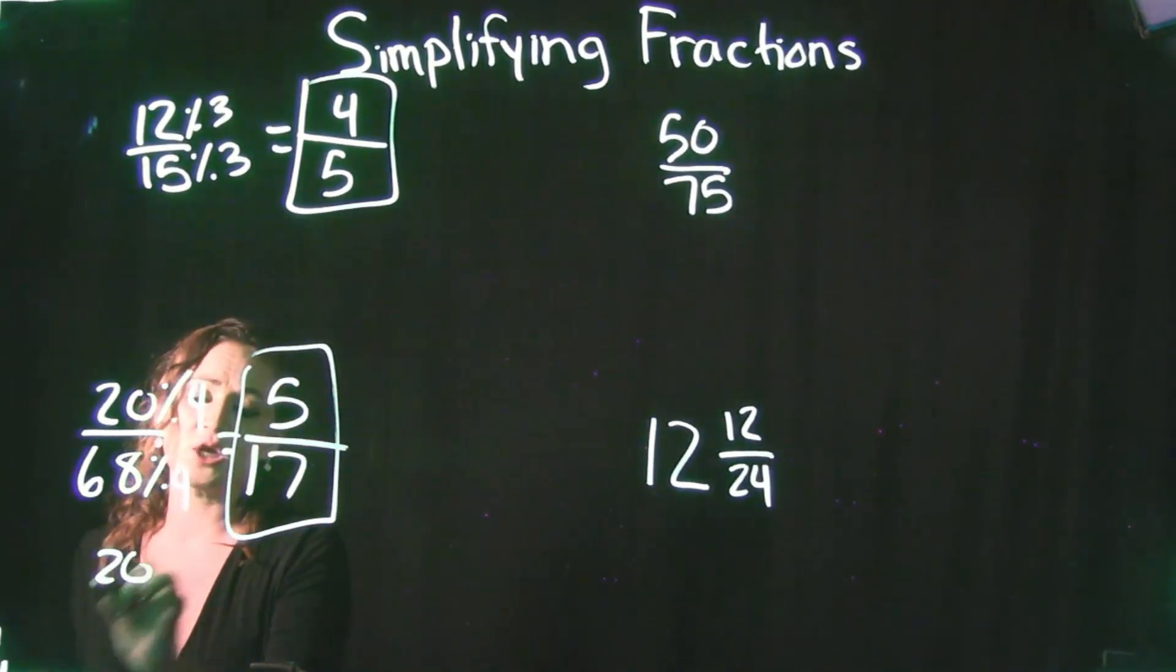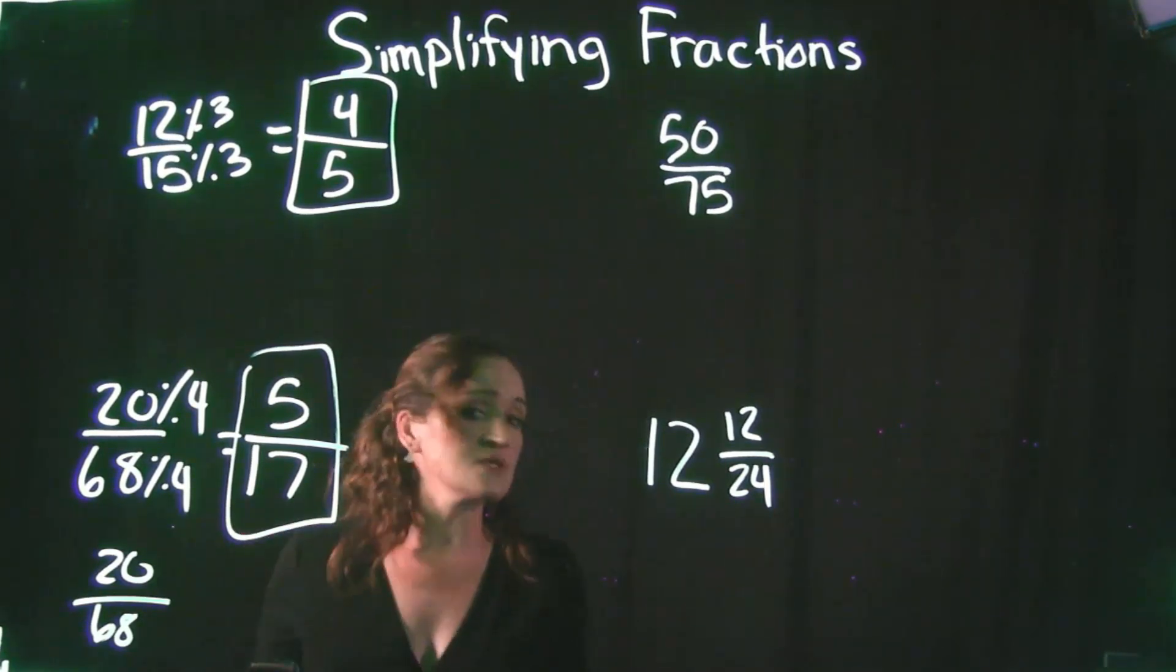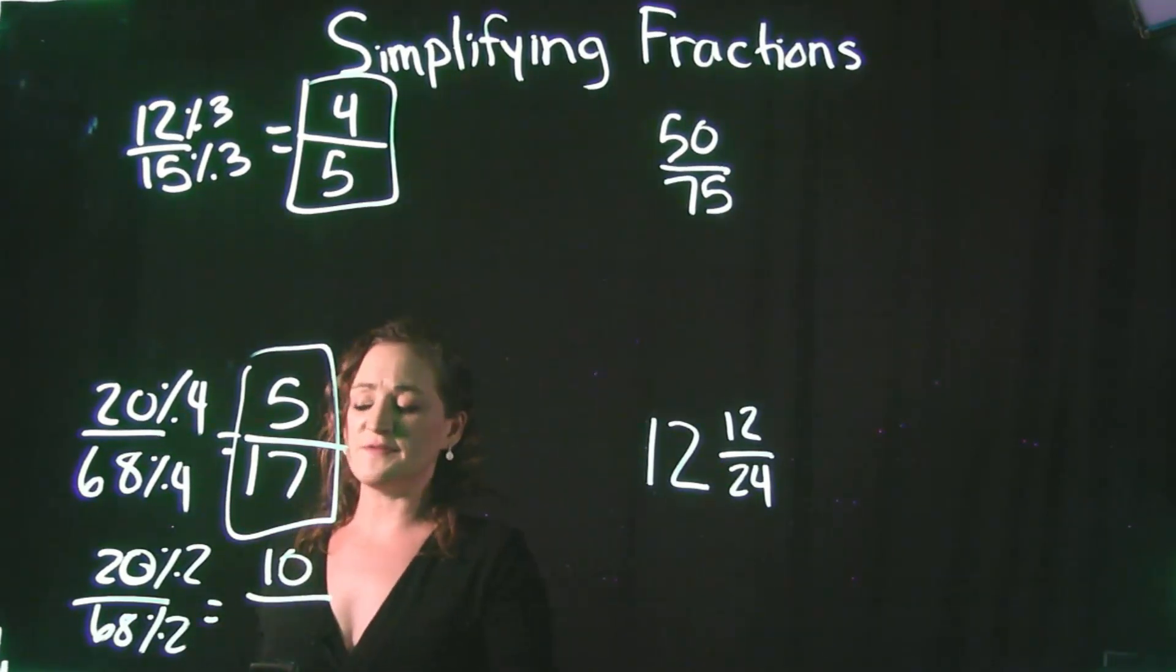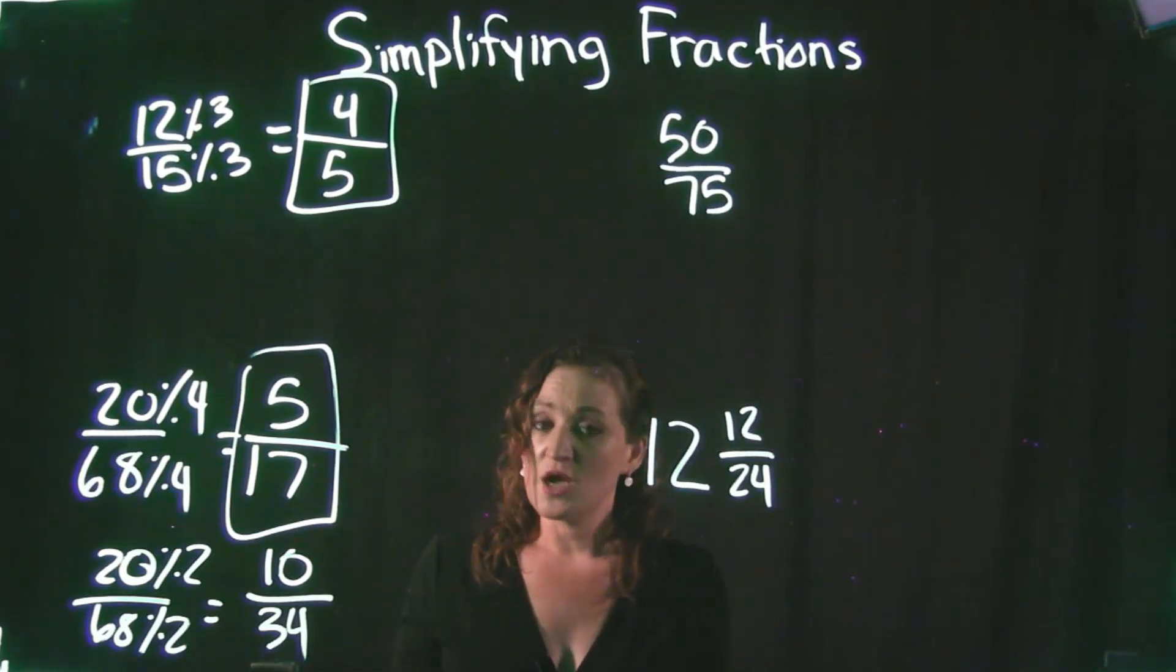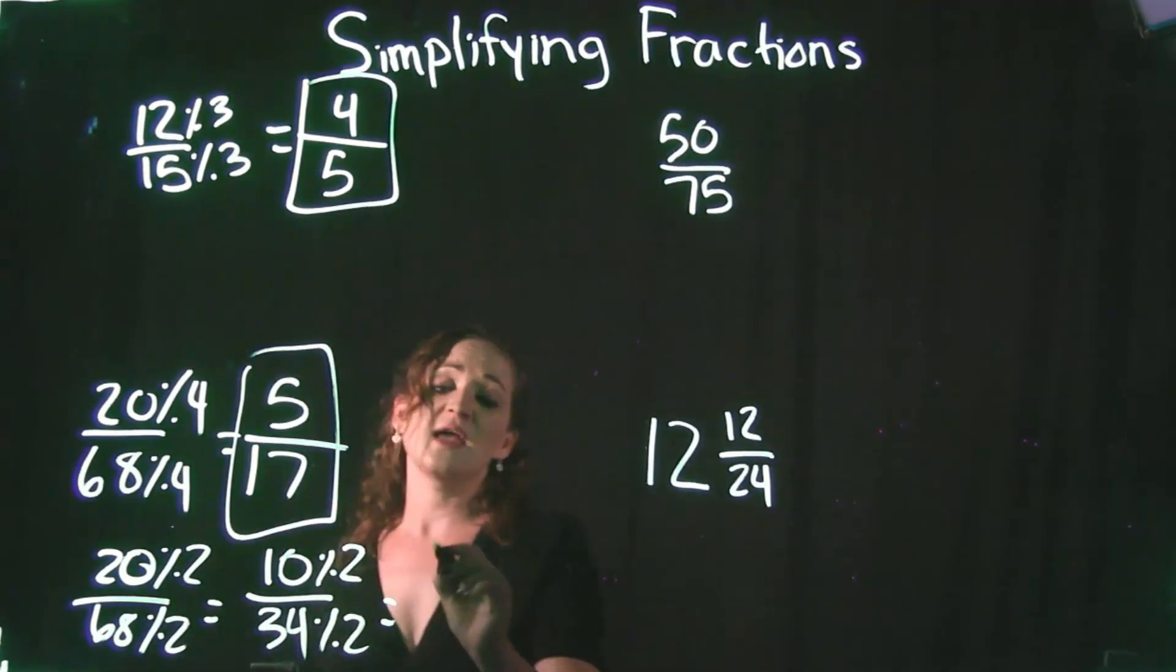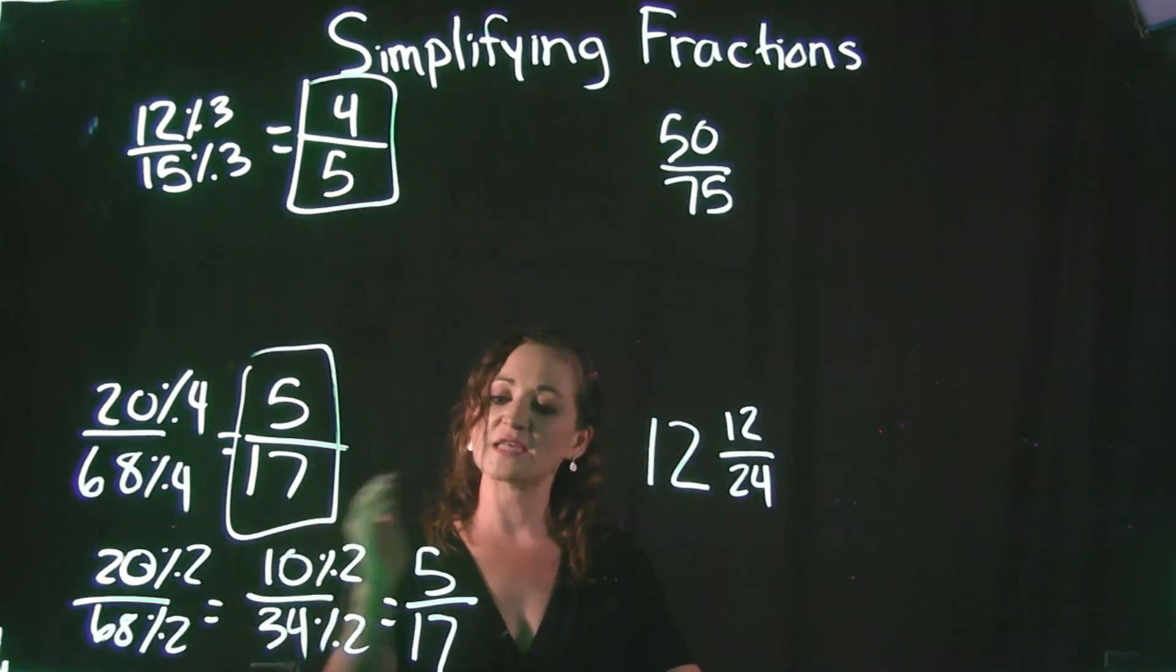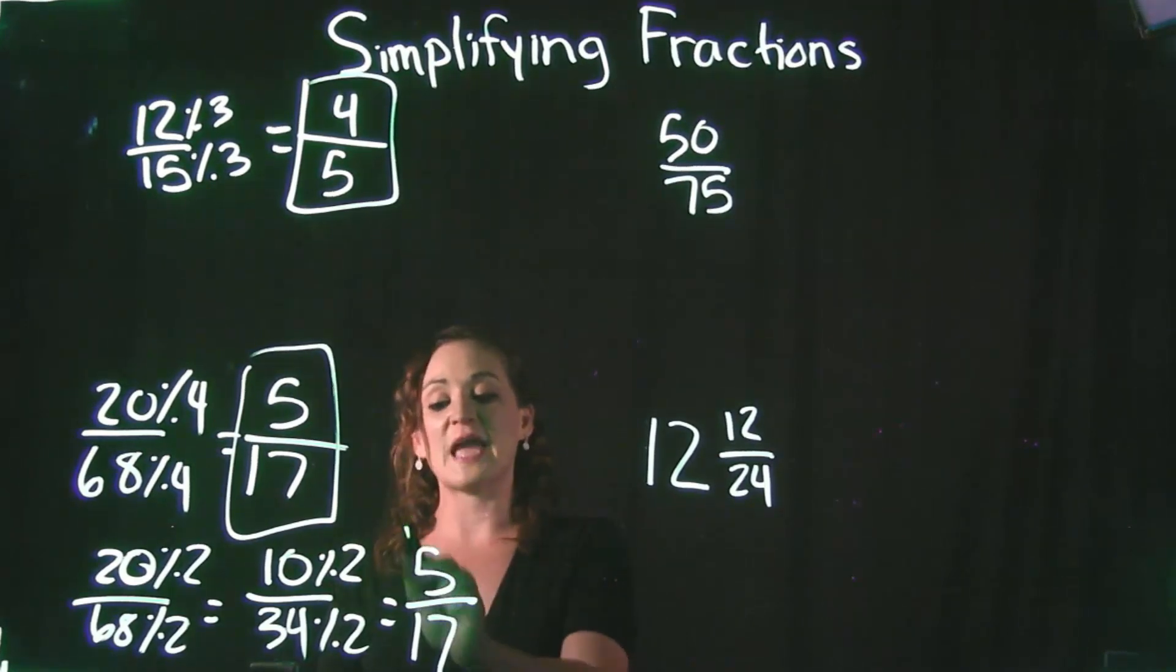Had you gone with the 2, then I'm just going to go ahead and do this again just to kind of show you what process you would go through if maybe you did not think of the 4. If 2 was the first thing that popped into your head, you can still use the 2. 20 divided by 2 is a 10. 68 divided by 2 is a 34. But if I look at this, a 10 and a 34 has something in common. They're both even numbers, so they definitely have a 2. So I would be able to divide out a 2 once again and after I did that, then it would get me to 5 seventeenths. So even if you don't think about the biggest number, that's okay. Just make sure that you continually check to make sure that there's nothing else in common with your numerator and denominator.